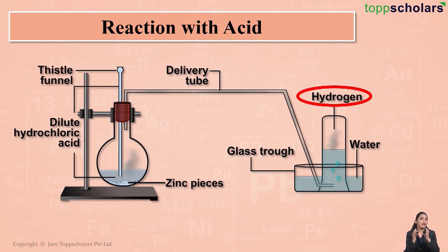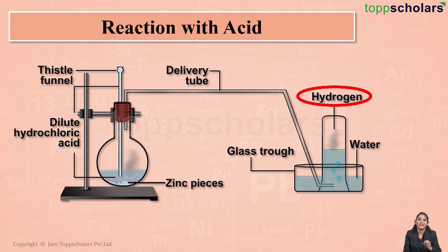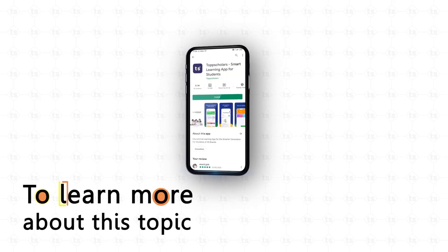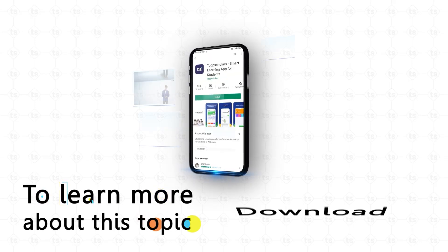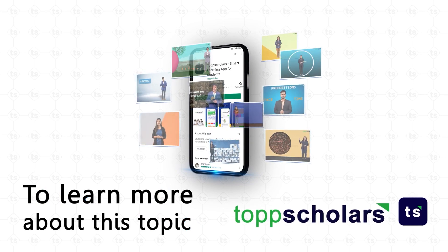So we understood that when metals react with dilute acid, hydrogen gas is liberated. To learn more about this topic, download the Top Scholars app.